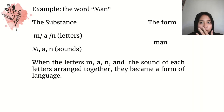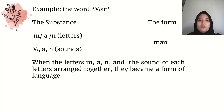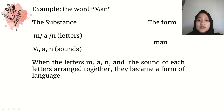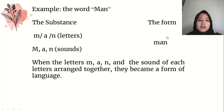So, for example, the word 'man'. The form is 'man', and the substance is the letters of 'man' and the sounds of 'man'. When the letters M, A, N and the sounds of each letter are arranged together, they become a form of language like this.